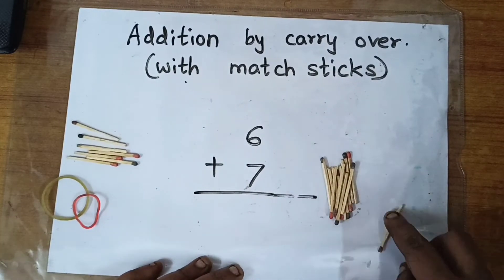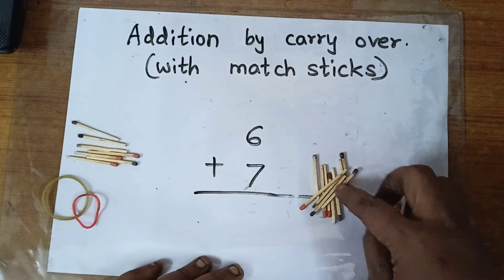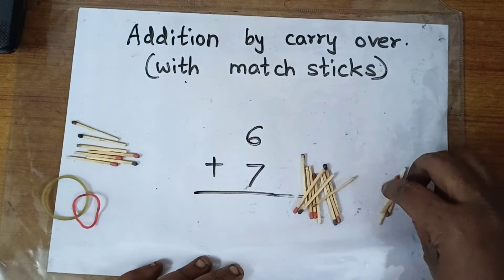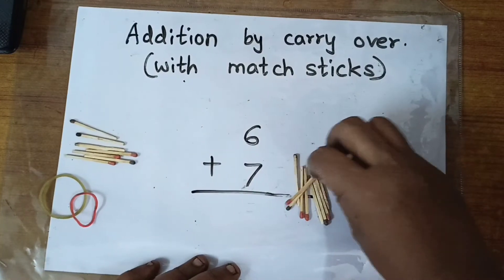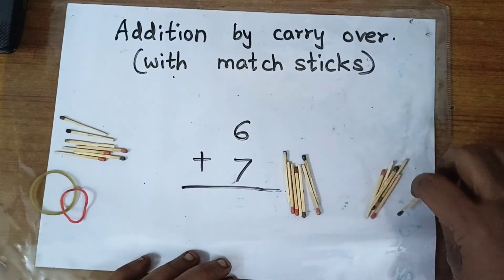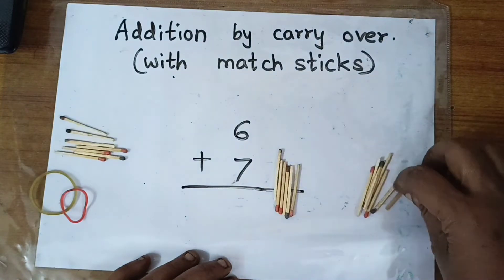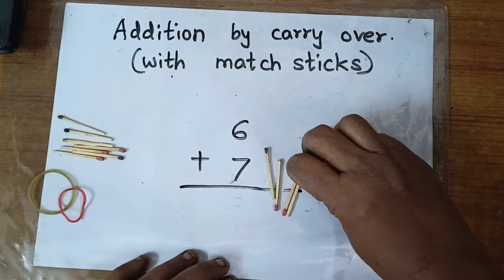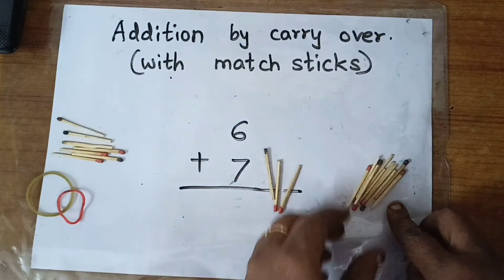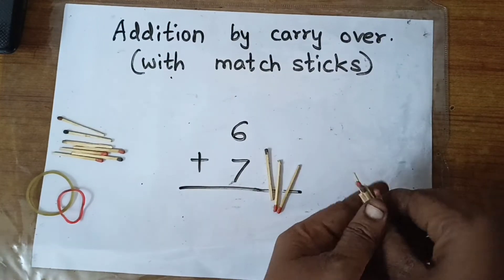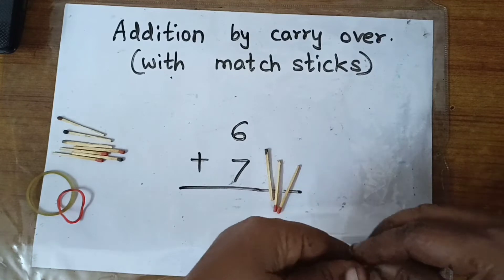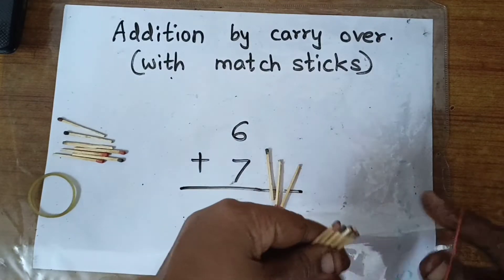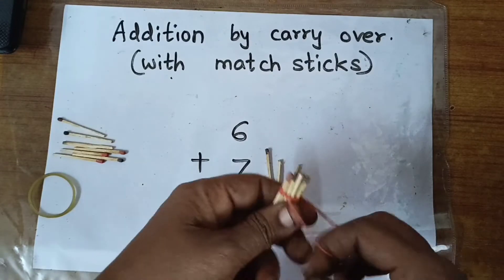Let us count: 1, 2, 3, 4, 5, 6, 7, 8, 9, 10. Now, when I get 10 units, it makes 1 ten. So I will tie them in a bundle — a tens bundle. So I got 1 ten here.